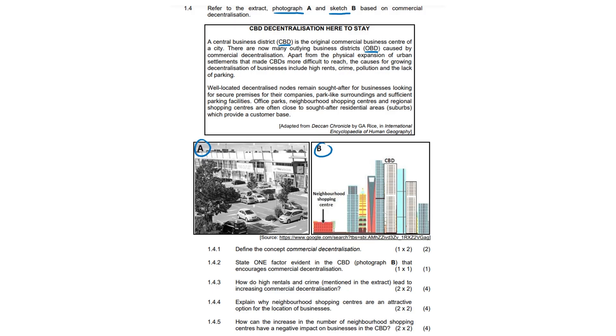Apart from the physical expansion of urban settlements that made CBDs more difficult to reach, the causes for growing decentralization of businesses include higher rents, crime, pollution, and lack of parking. While located, decentralized nodes remain sought after for businesses looking for secure premises, park-like surroundings, and sufficient parking facilities. Office parks, neighborhood shopping centers, and regional shopping centers are often close to residential areas or suburbs, which provide a customer base.